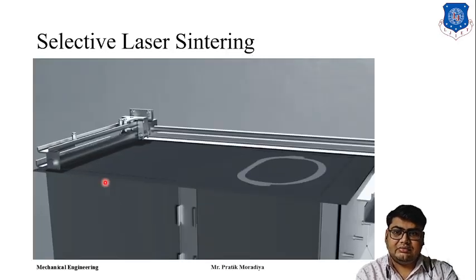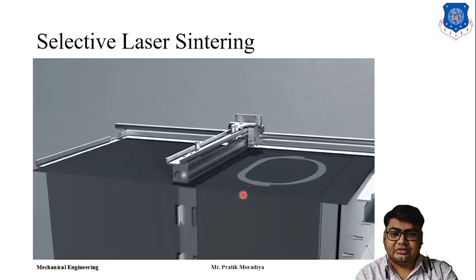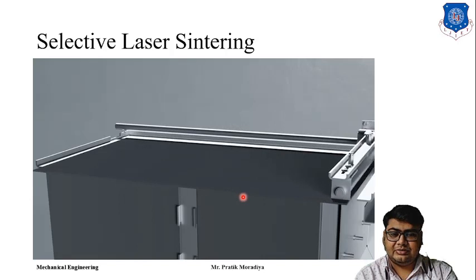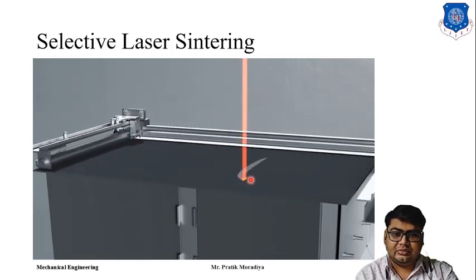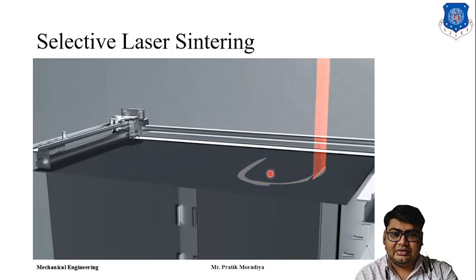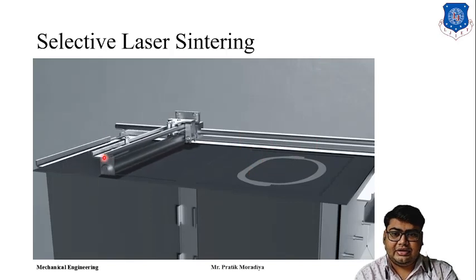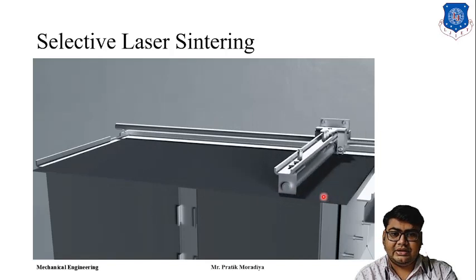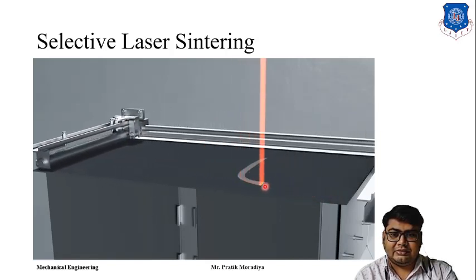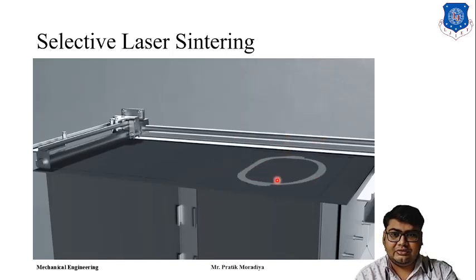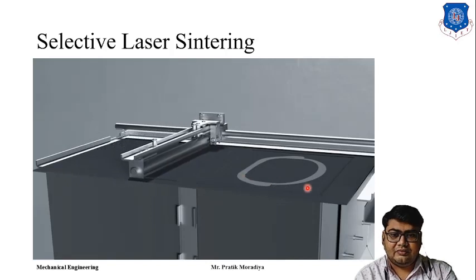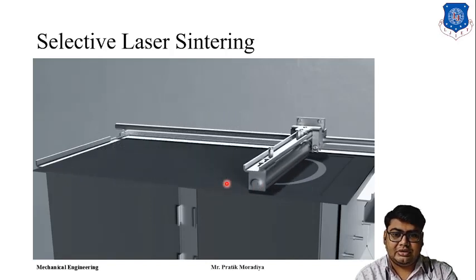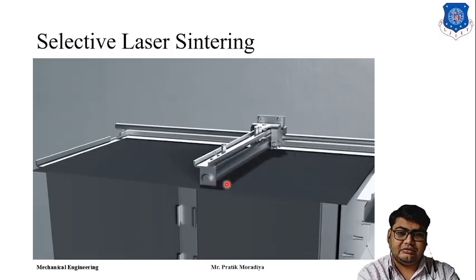This is the actual process happening in selective laser sintering. A roller deposits a layer of powder, then the laser sinters some material. Again the roller forms another layer of powder, the part is sintered further, the platform is lowered slightly, and a new layer of powder is formed using the roller. This is the process of selective laser sintering.